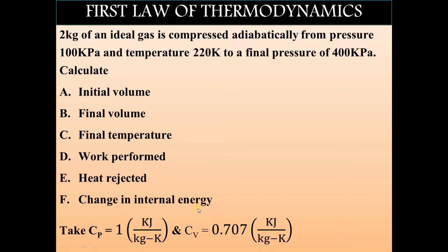In this question we have to find six parameters: first, initial volume — the volume at the beginning of adiabatic compression; second, final volume — the volume at the end; third, final temperature — the temperature at the end; fourth, work performed — the amount of work done in compressing the gas; fifth, heat rejected; and sixth, change in internal energy during the process.